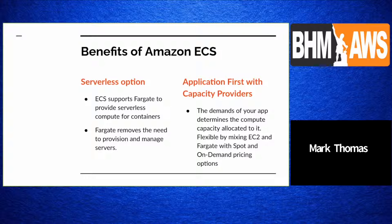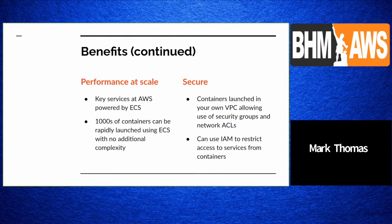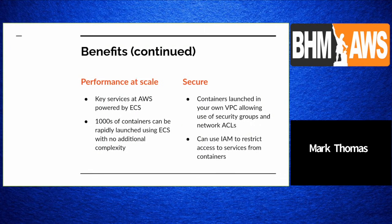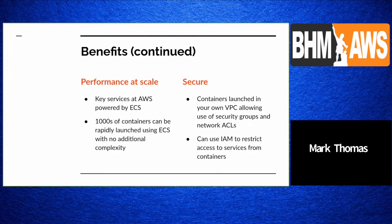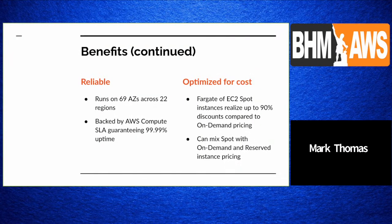Key AWS services are powered by ECS. You can launch thousands of containers rapidly with no additional complexity. It's a very secure service — containers launch into your own VPC, allowing you to use security groups and network ACLs, and you can use IAM to restrict container access to other AWS services. ECS runs across 69 Availability Zones in 22 regions, backed by a compute SLA guaranteeing 99.99% uptime.